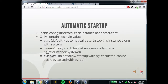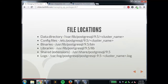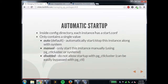For automatic startup, inside the config directory for each cluster there's a file called start.conf. That file only has one value in it — either 'auto', which is the default and automatically stops and starts the cluster when the system boots and shuts down; 'manual', which won't start it when the server starts but you can still use cluster management commands; or 'disabled', which only disables the cluster management commands — you can still use pg_ctl directly and it'll still work.